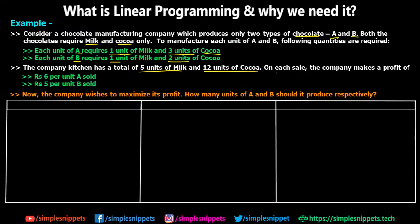The company makes a profit of six rupees per unit of chocolate A sold and five rupees per unit of chocolate B sold. The real question is: the company wants to maximize this profit. So how many units of A and B should it produce respectively? The company wants to gain the highest amount of profit using only five units of milk and twelve units of cocoa, and it needs to know what quantity of each chocolate to make.